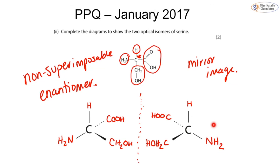If you're not sure about enantiomers, please go back to topic 15 and have a look at the textbook or find some past paper questions. Make sure that you do know what optical isomers are and how to draw them. That's everything for amino acids and proteins, and that wraps up topic 19. I hope this video has been useful. If there's anything you're not sure about, please feel free to leave a comment, and I hope to see you back on the channel for future topics.